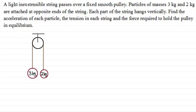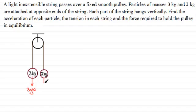For problems like this, always sketch a diagram and put on the forces acting on each particle. On the 3 kilogram mass, the weight acts downwards — that's mg, so 3g newtons. Similarly, for the 2 kilogram mass, the weight acts downwards and is 2g newtons. There's also a tension in the string acting upwards on each of the particles.